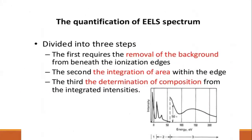Quantification of the ELS spectrum is divided into three steps. First requires the removal of the background from beneath the ionization edges. Second, the integration of area within the edges. Third, the determination of composition from the integrated intensities.